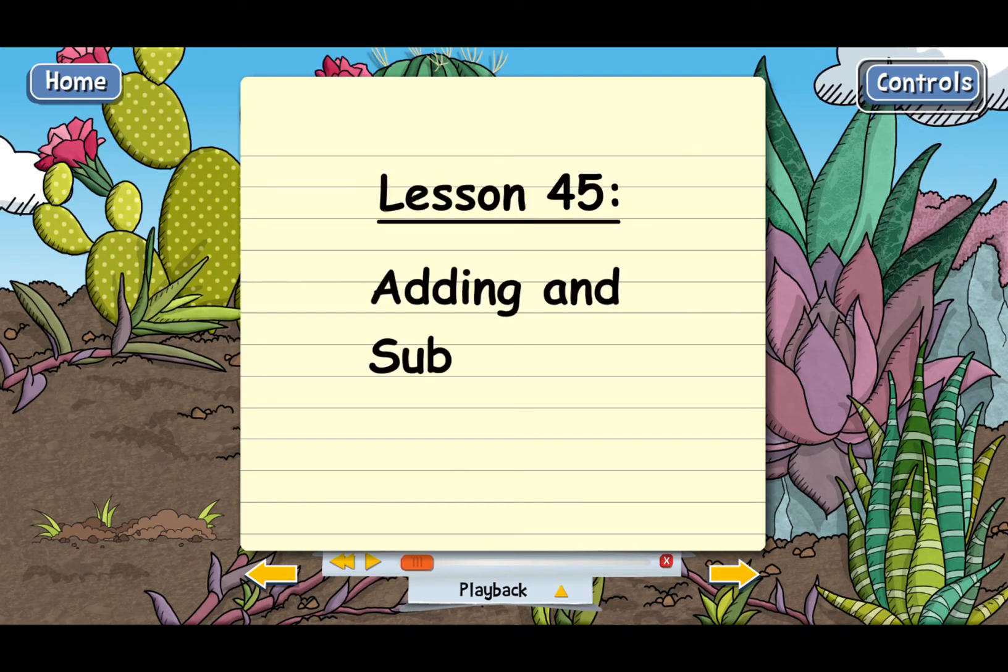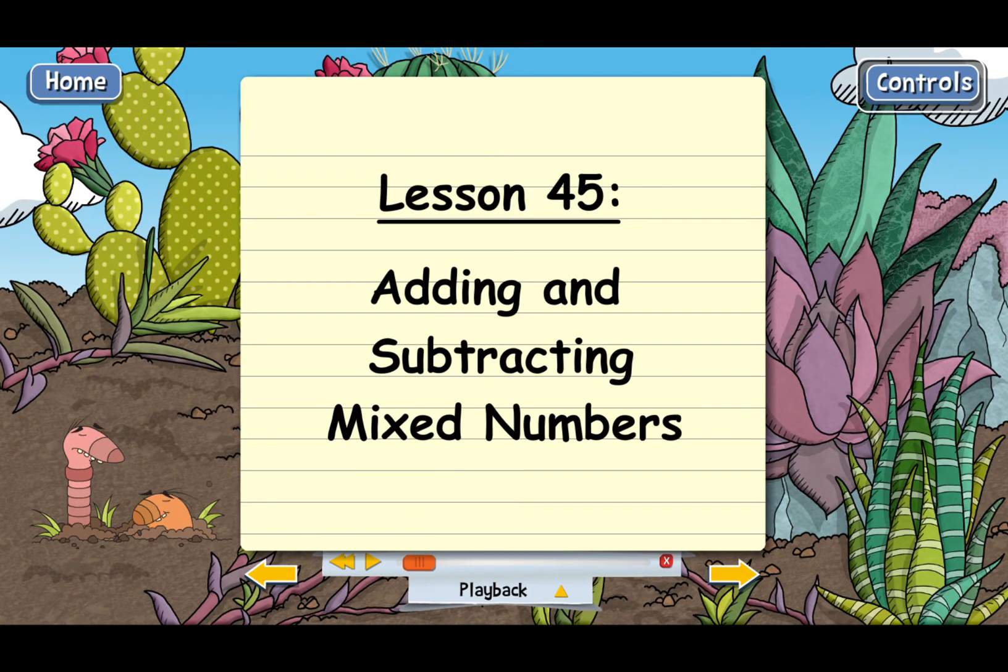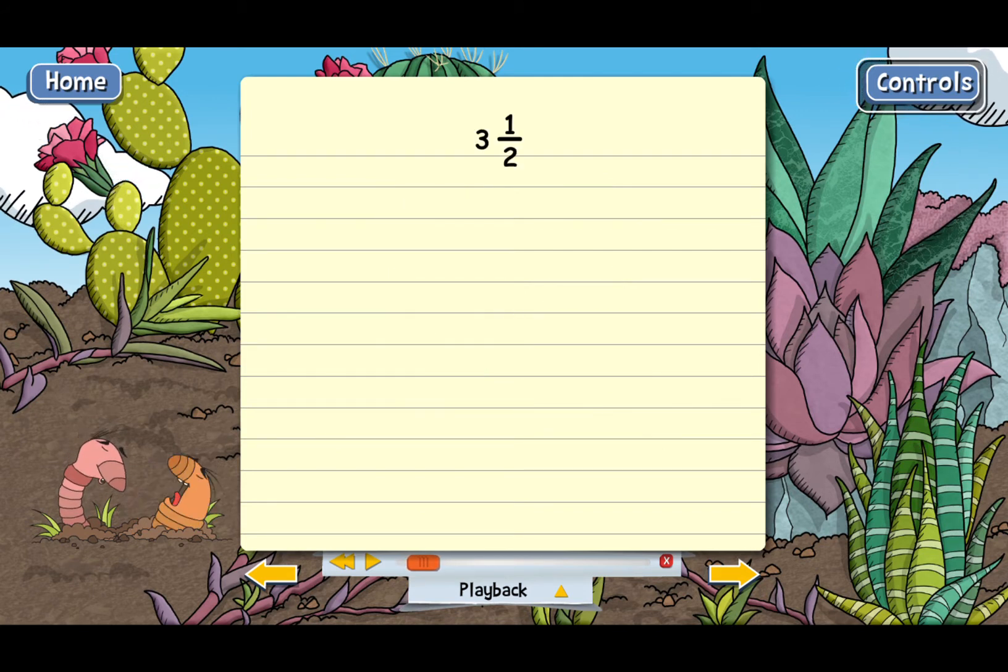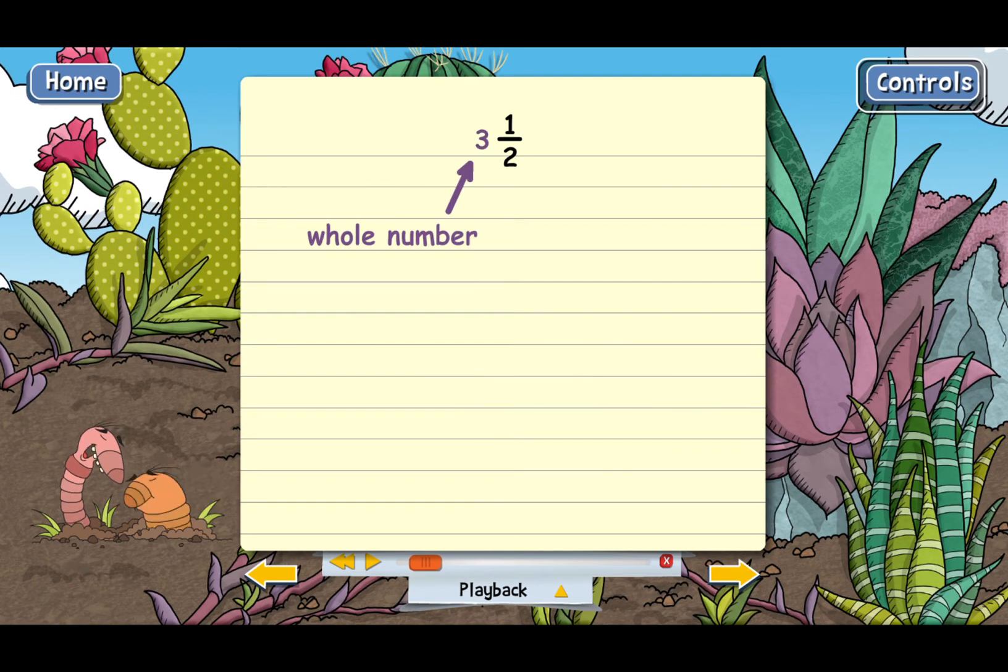Lesson 45, adding and subtracting mixed numbers. In the last lesson, we learned about mixed numbers. Those are numbers like three and one half that have a whole number part and a fraction part.